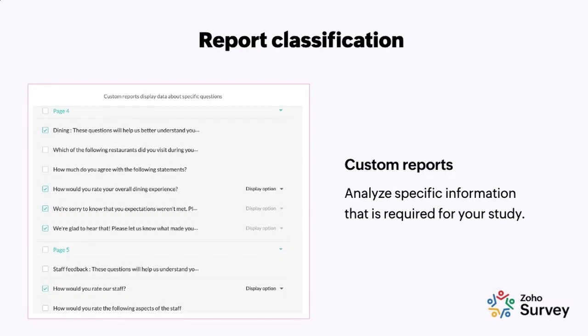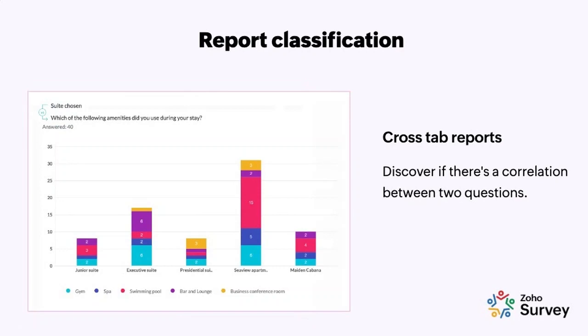Next come crosstab reports. These help you understand if there is a correlation between two questions. For example, the EOS wants to see if there is a correlation between the suite chosen by the customer and the amenities they use. They create a crosstab report, select the questions to compare, and the report is generated. You can see that most people who used the swimming pool stayed in the sea view apartment, and the bar and lounge was mostly used by people in the executive suite.